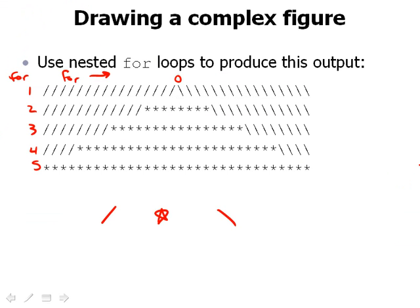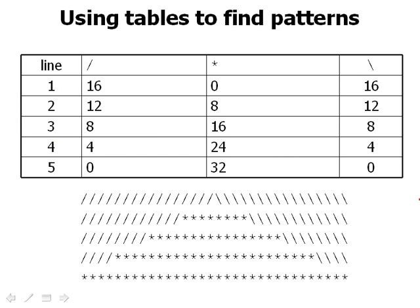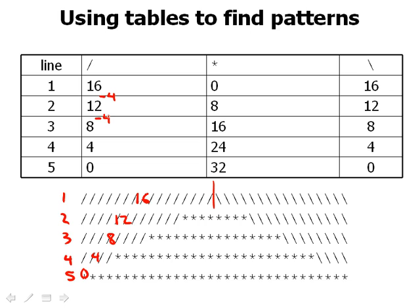It's hard to figure out the relationship just by looking at the output, so our suggestion is to make a little table that relates the two values. I've counted the occurrences of each character next to the line number. Looking at the slashes: line 1 has 16, line 2 has 12, line 3 has 8, line 4 has 4, line 5 has none. Each time the line increases by 1, the slash count goes down by 4.